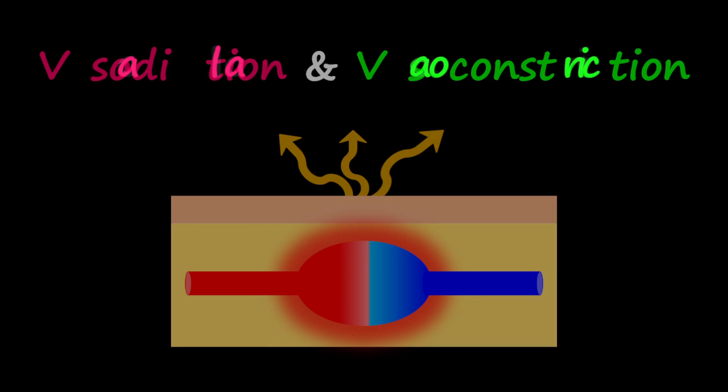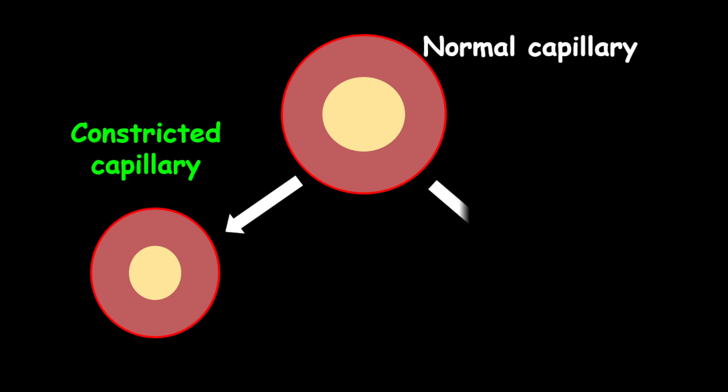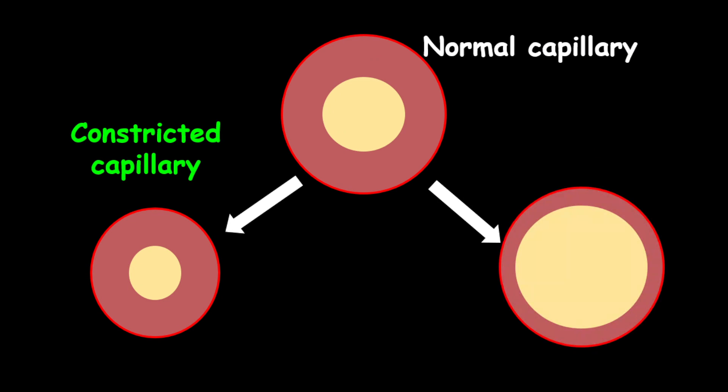Firstly, let us compare a normal capillary to that of a constricted capillary and also a dilated blood capillary. The word constricted comes from the word contract, which means to get smaller, while dilation comes from being wider, which also means to relax. And so a dilated capillary will be much wider compared to a constricted capillary.